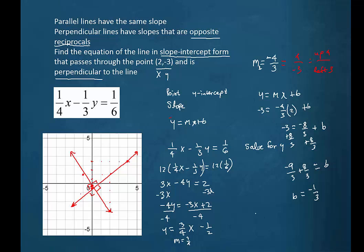So the equation of the line that we were looking for turns out to be y equals minus four thirds x minus one third.